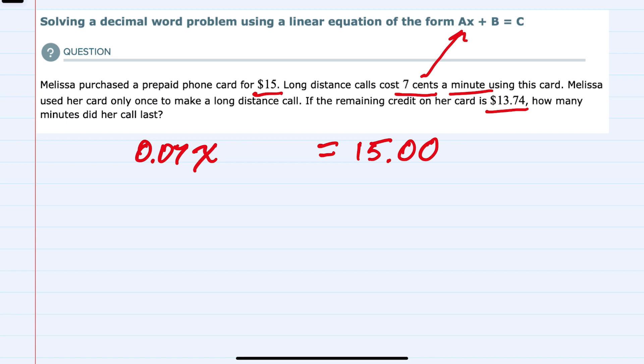If we take that amount, the amount that she spent plus the $13.74, then that should equal the total of $15. Now that we have translated it, we can start to solve.